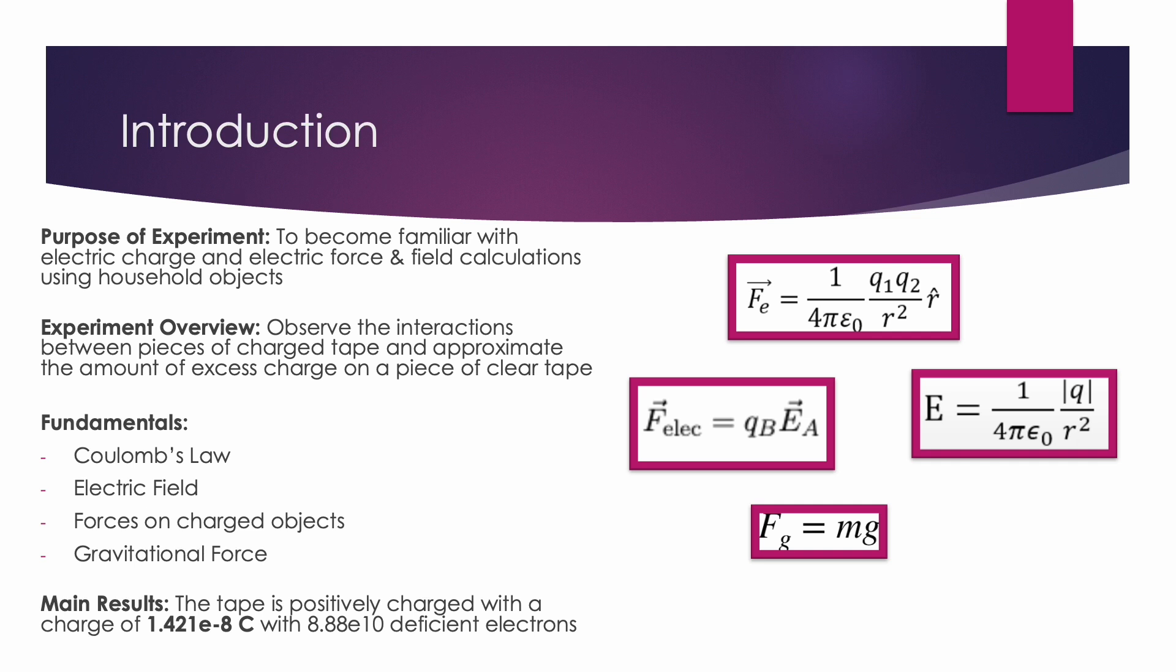Important concepts included Coulomb's Law, electric field, electric force, and gravitational force. The main result in this experiment is the finding of a piece of U-tape to have a positive charge of 1.421 times 10 to the negative 8 Coulombs, with 8.07 times 10 to the negative 8 deficient electrons per atom.